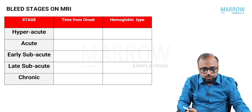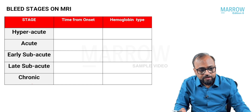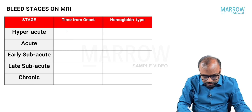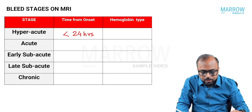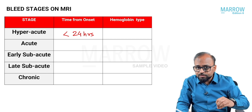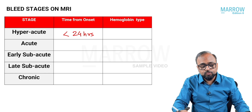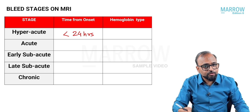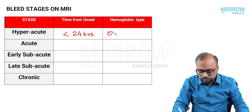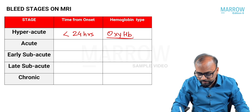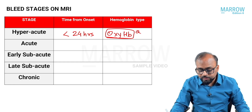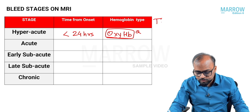Looking at time of onset: a bleed is hyperacute if it is less than 24 hours from onset. At that site, because it is a fresh bleed, the most common type of hemoglobin in that hematoma is oxyhemoglobin. This component is going to determine its appearance on T1 and T2 weighted images.